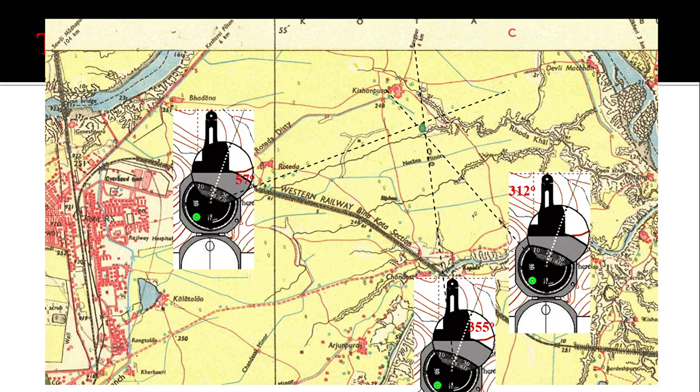This is forward bearing — we stand on a known point and look for the unknown point using the Brunton compass. The next one is back bearing, in which we will be standing on an unknown point. From that point, we look for the known point on the topo sheet and then calculate our location.